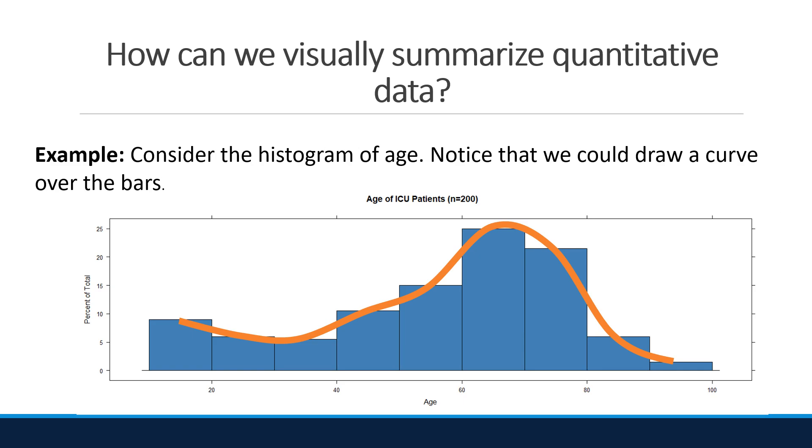Example, consider the histogram of age. Notice that we could draw a curve over the bars. Even though the curve is not perfect, it is close to a left skew. We would say this data set has a left skew shape. Notice the shape is also unimodal.